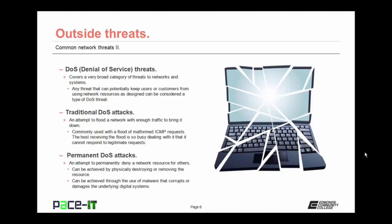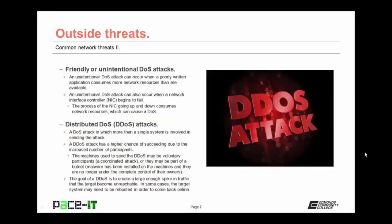Then there's the permanent DOS attack — an attempt to permanently deny a network resource for others. It can be achieved by physically destroying or removing the resource, or through malware that corrupts or damages the underlying digital system to the point where it cannot be repaired and must be replaced. There are also friendly or unintentional DOS attacks — for example, when a network interface controller, or NIC, begins to fail. It's quite common for a failing NIC to go offline and come back online repeatedly and rapidly, consuming network resources and causing an unintentional DOS.